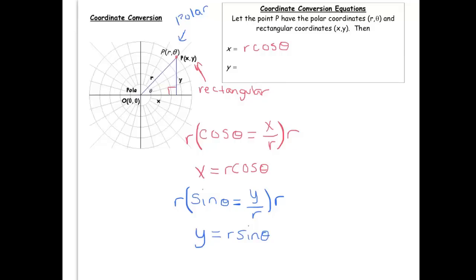So converting from polar to rectangular is really easy because your x coordinate is just r cosine theta and the y coordinate is r sine theta. Great.